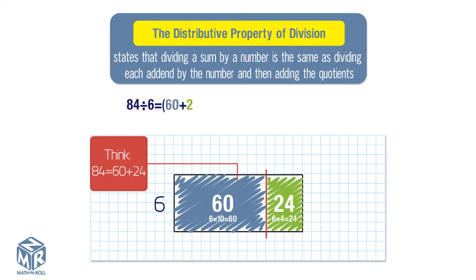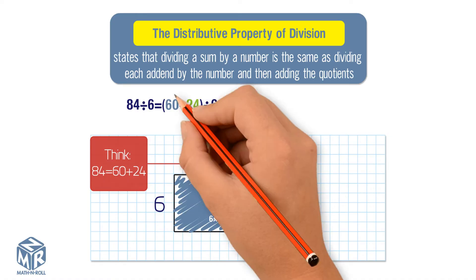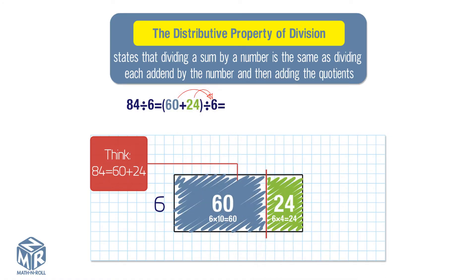Now you can use the distributive property to divide. We divide each addend, 60 and 24, by 6. 60 divided by 6 plus 24 divided by 6.